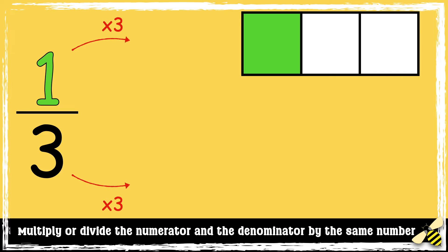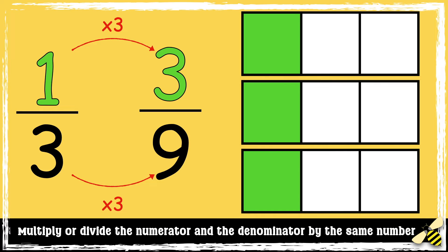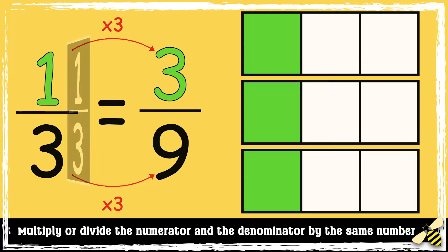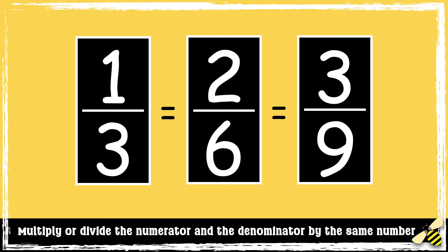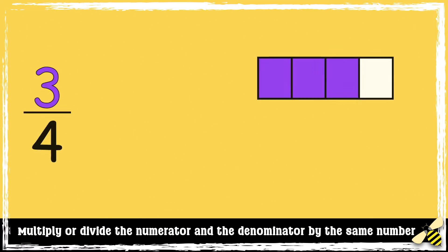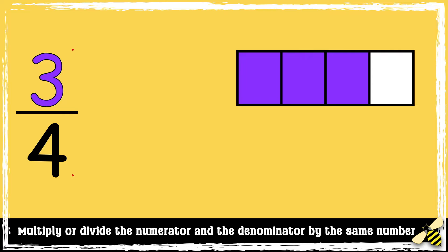Let's go back to 1/3, but this time I'm going to multiply the numerator and the denominator by 3. So 1 times 3 is 3, and 3 times 3 is 9 — so 1/3 is equivalent to 3/9.